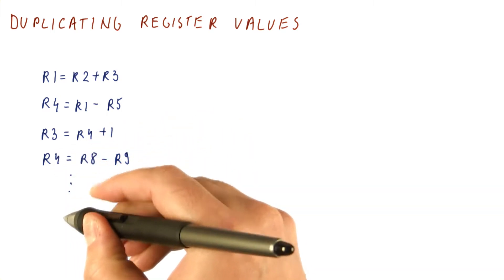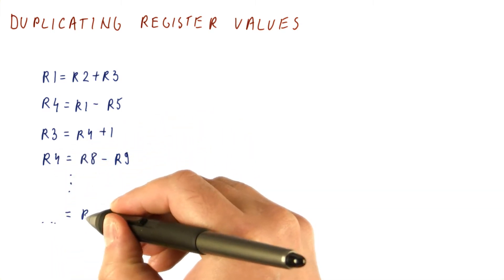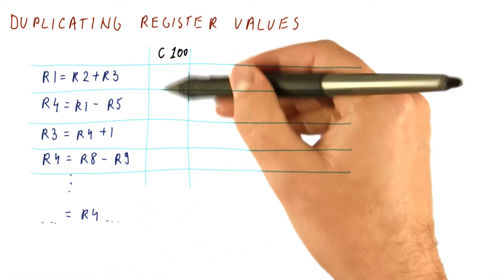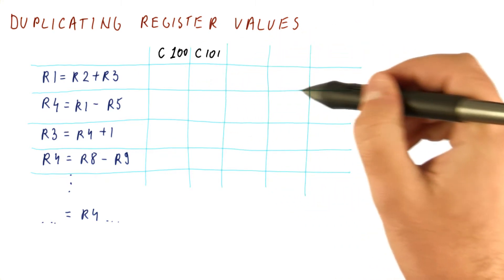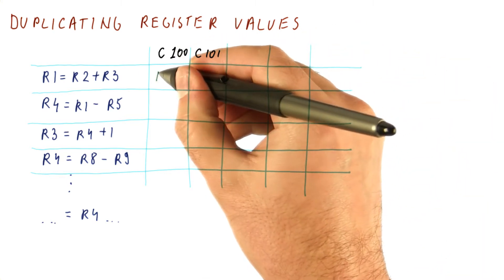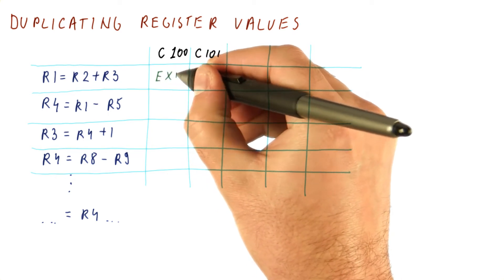And sometime later, we have an instruction that uses R4. Here we have what happens in some cycle. Let's call it cycle 100 and in the next few cycles. And let's assume that cycle 100 is when this instruction can execute.